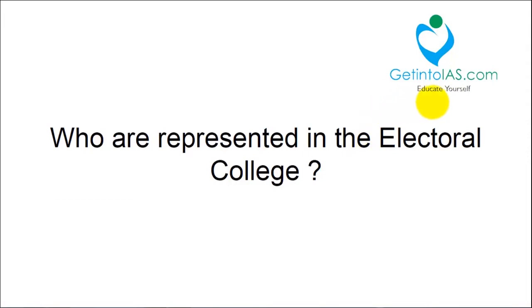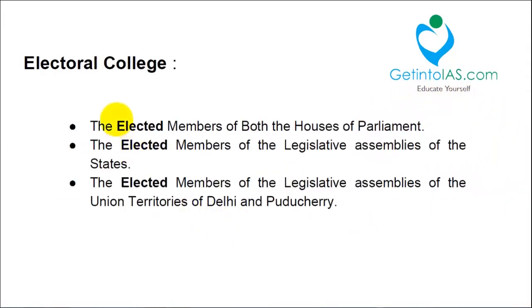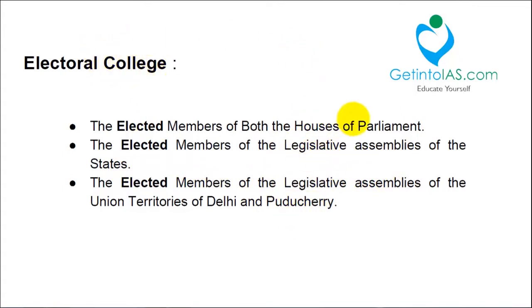The electoral college elects the president. It is represented by the elected members of parliament and elected members of state legislative assemblies, including Delhi and Puducherry. Note the word 'elected' — in parliament and state assemblies there are both elected and nominated members. Nominated members are persons of special importance who have excelled in their fields, for example Sachin Tendulkar is a Rajya Sabha MP nominated for excellence in cricket. Those nominated members are not entitled to take part in the presidential election. Only the elected members of parliament and state legislative assemblies participate.